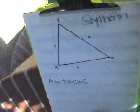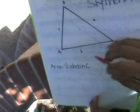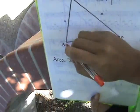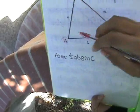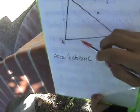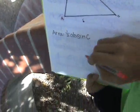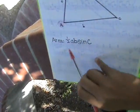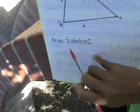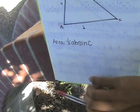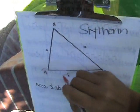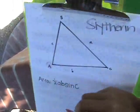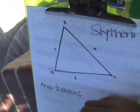Now, team, let's look at the game plan. This is A, where you are. In order to cover the most area, we have to use the formula one-half A, B, sine C. So everyone, spread out and go this way! BREAK!